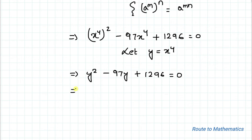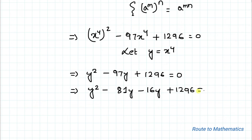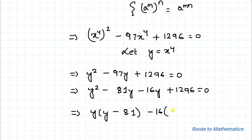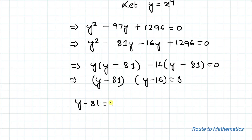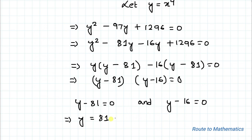Let's use the middle-term splitting method to factorize this quadratic equation. We write minus 97y as minus 81y minus 16y, giving y squared minus 81y minus 16y plus 1296 equals 0. Taking y common from the first pair and minus 16 common from the second pair, we get y(y minus 81) minus 16(y minus 81) equals 0, so y equals 81 and y equals 16.